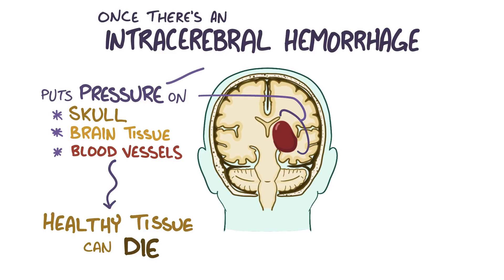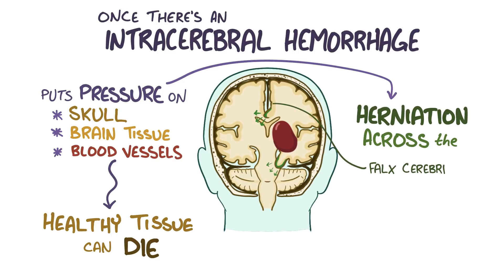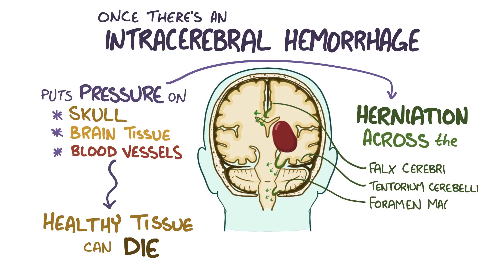Increased pressure within the skull can also lead to brain herniation, which is when the brain moves across structures in the skull. These structures include the falx cerebri, which divides the two halves of the brain, the tentorium cerebelli, which divides the occipital lobes from the cerebellum, and the foramen magnum, which is the hole in the base of the skull where the spinal cord connects to the brain.